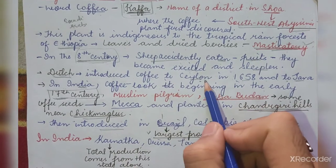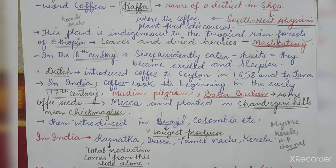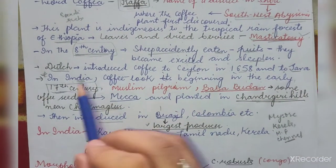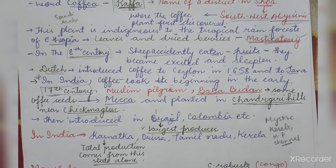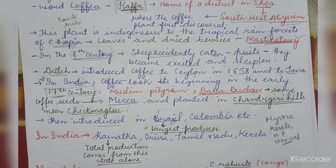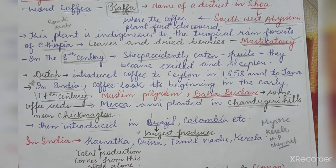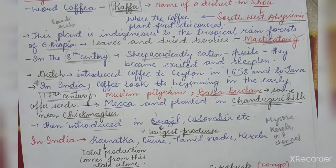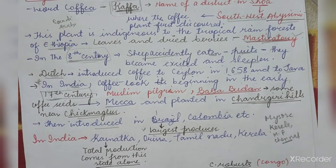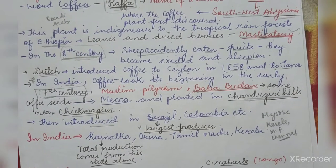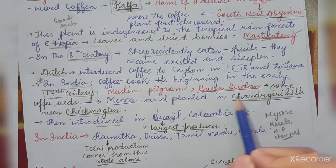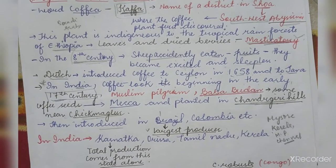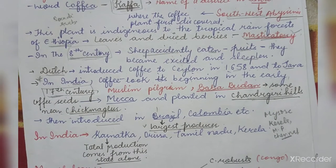In India, coffee took its beginning in the early 17th century. An important name here is Baba Buddhan Shah, a Muslim pilgrim who brought some coffee seeds from Mecca and planted them in the Chandragiri Hills near Chikmagalur. So it was Baba Buddhan Shah who first planted coffee in India, near Chikmagalur.